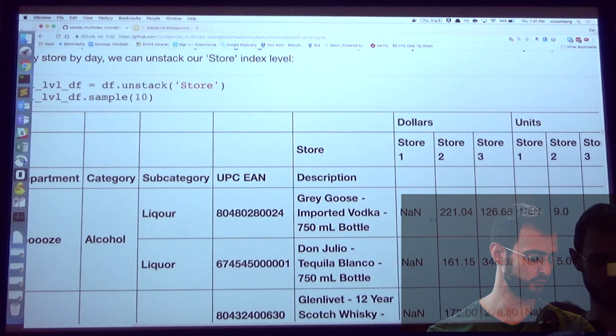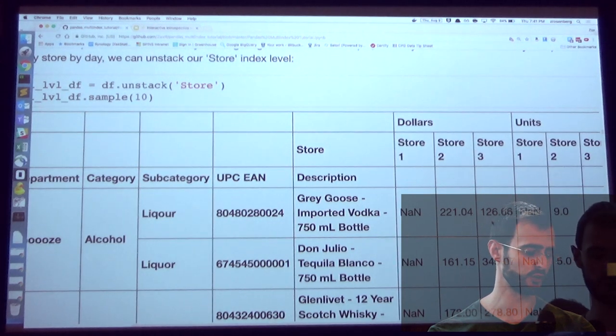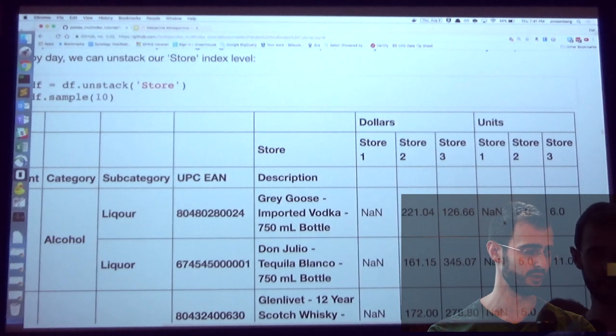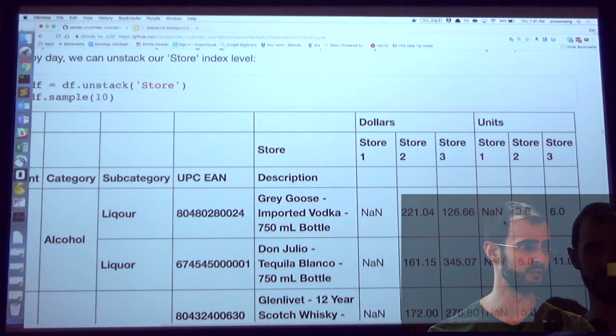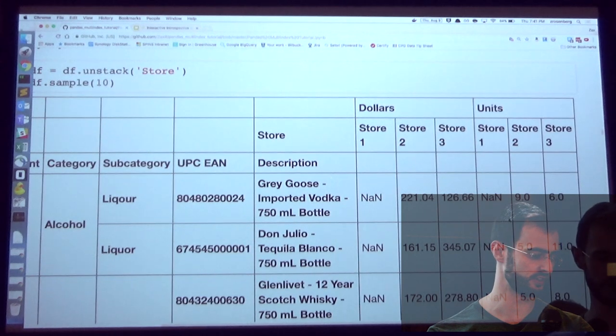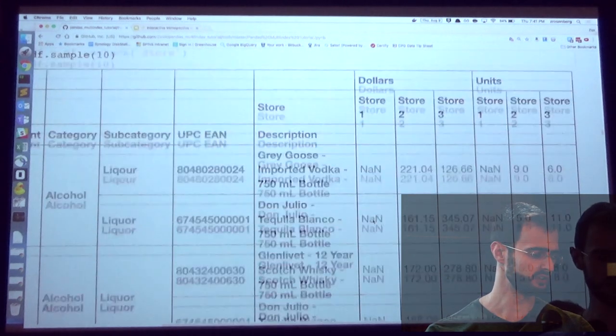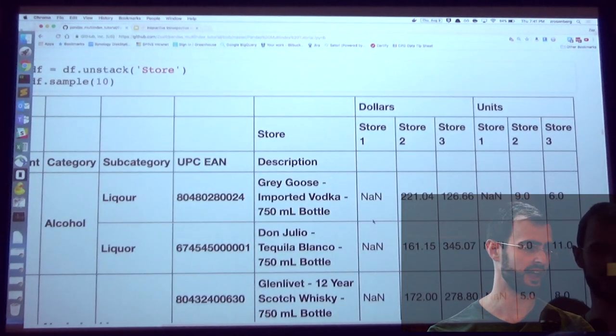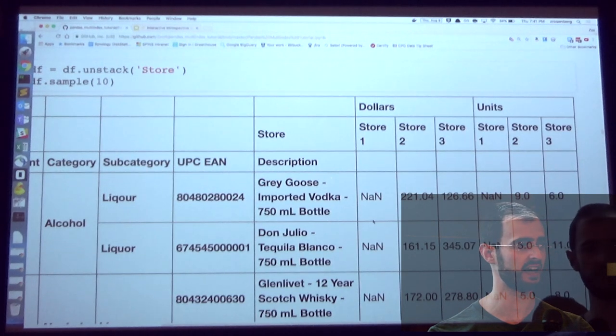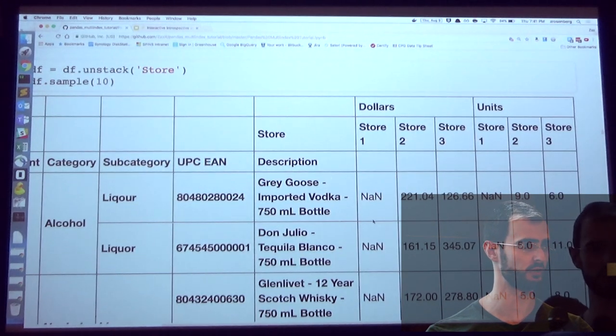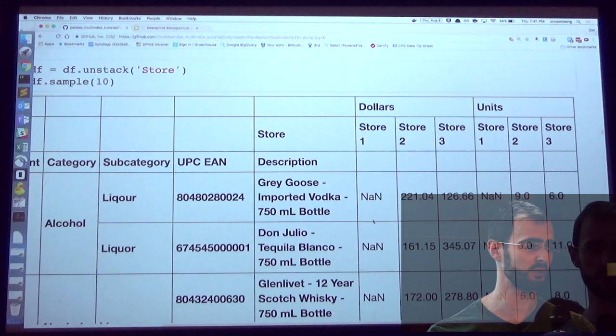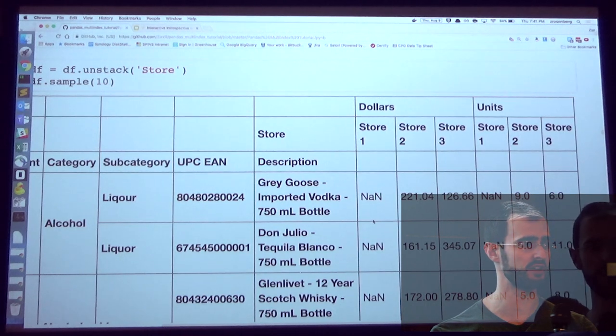I might want to, I have three stores that are selling the same product. I want to know how they did next to each other. And so I'll see that store two for Grey Goose sold $221 worth on this particular day. Store three only sold $126. I don't know, maybe that's okay, maybe it's not. We'll have to figure that out later. And here's the number of units that they sold. You can similarly stack the items back. You can unstack as many as you want and stack as much as you want until you have a single list or a single series. And that can be incredibly powerful when you're trying to manipulate or pivot data.